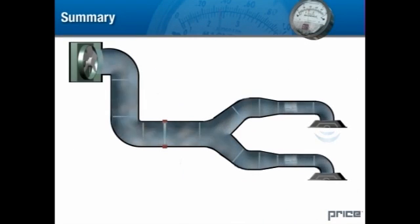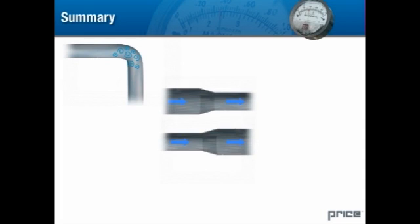These are just a few representative transitions commonly found in an HVAC system, and we have seen how each affects air pressure. Whenever airflow is required to change direction, turbulence is produced and there is a loss in total pressure. We have seen how velocity pressure is transformed into static pressure and vice versa as air flows through different sized ducts. And finally, we have looked at the pressure drops created by diffusers. Each and every component must be carefully selected to minimize pressure losses in the HVAC system.